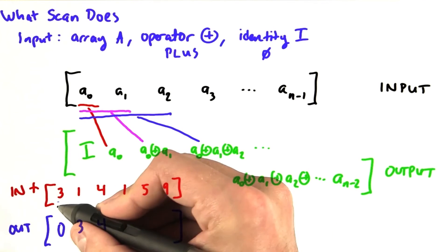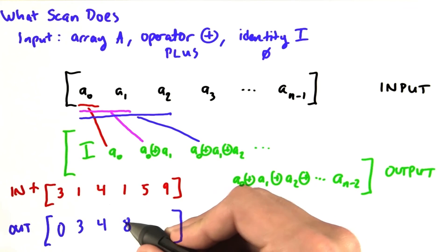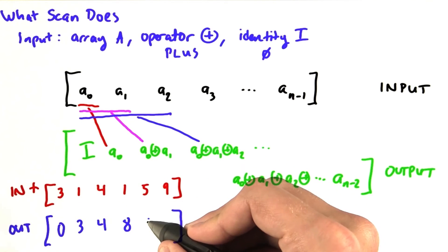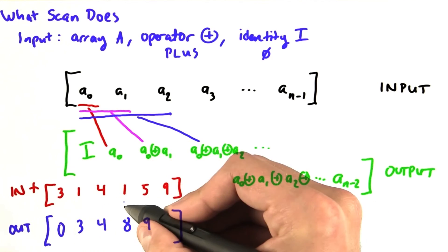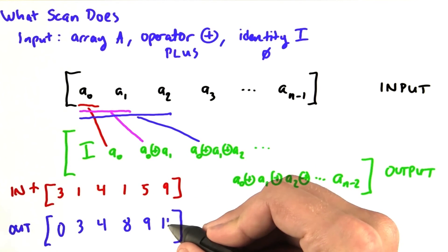3 and 1 make 4. 3, 1 and 4 make 8. 3, 1, 4, and 1 make 9. And 3, 1, 4, 1, and 5 make 14.